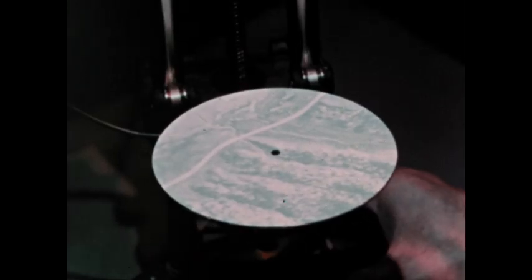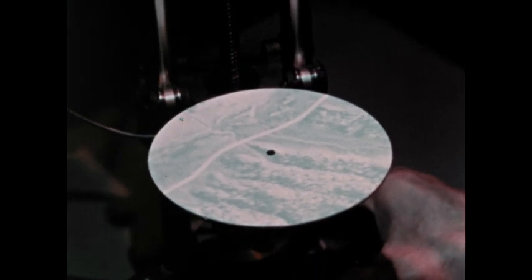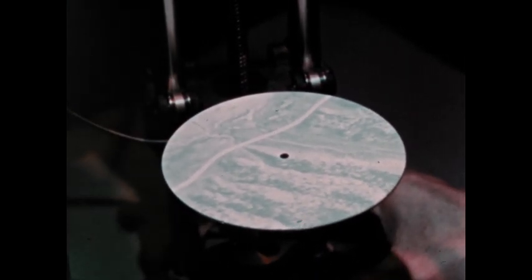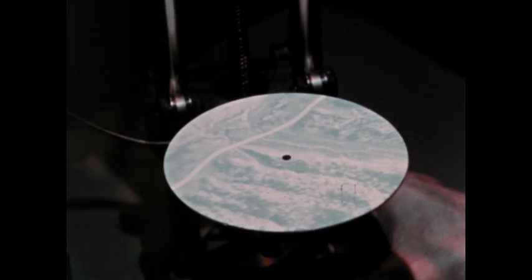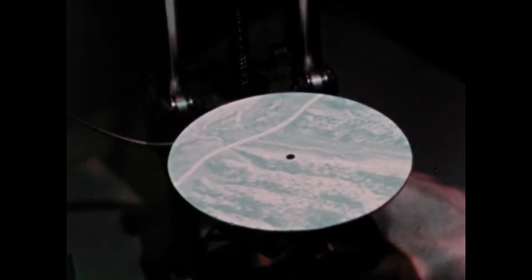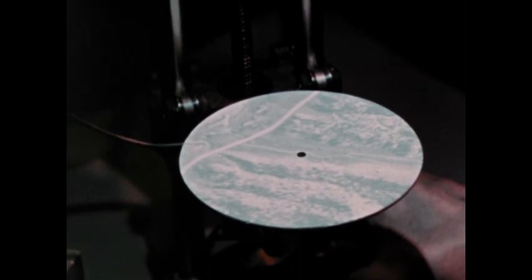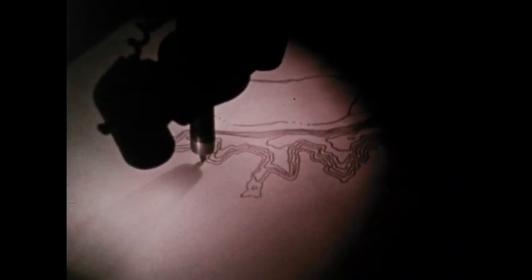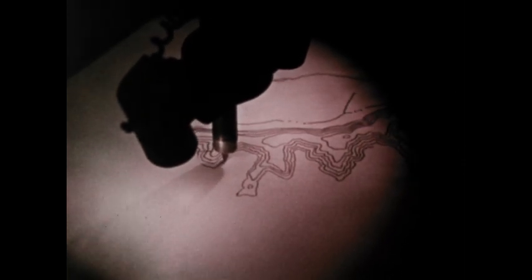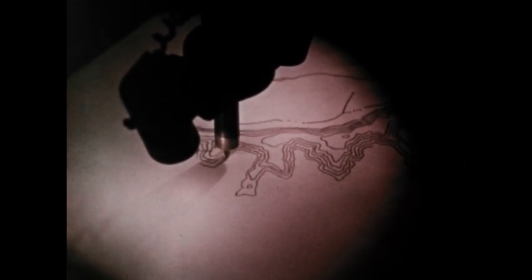To show changes in height, the same instrument is used. The dot of light is locked at a specified level, and the operator traces all those points on the photographs that are that particular height. This produces a contour line. When one line is finished, the dot is set at a different elevation and another contour line is added.